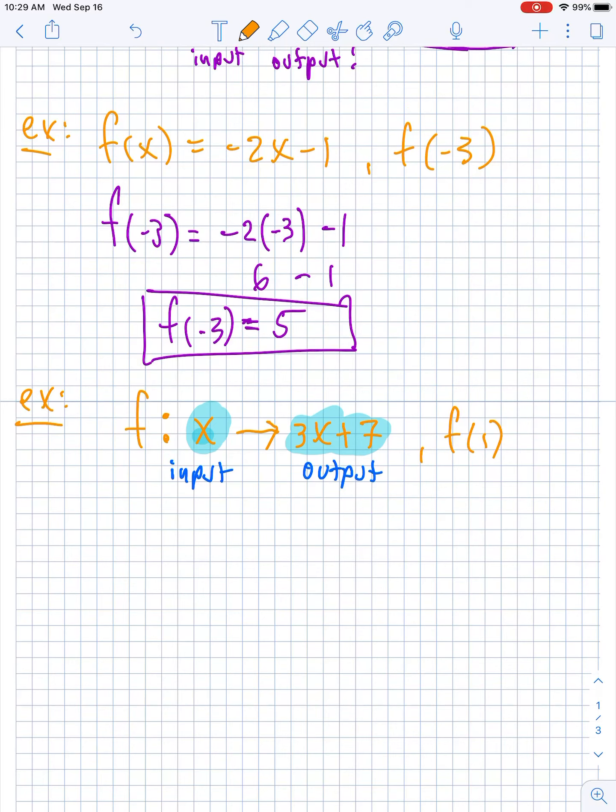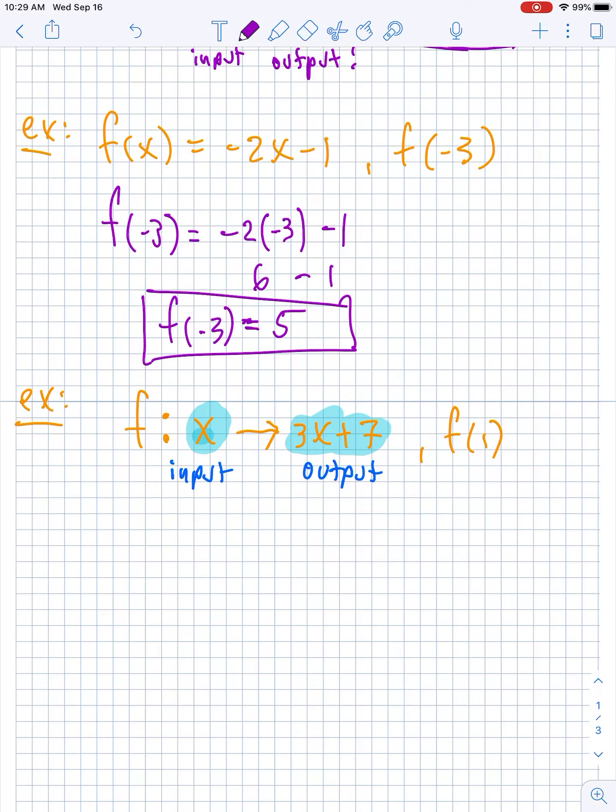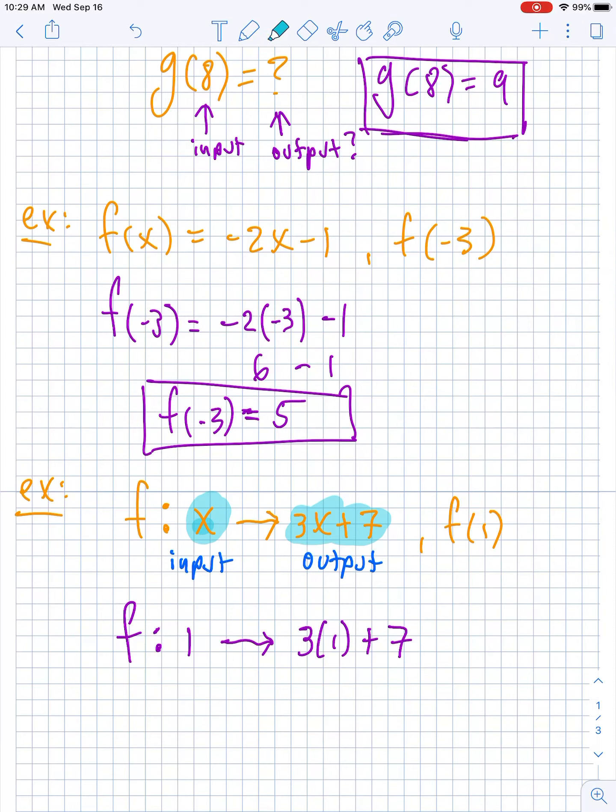So I believe in the example in the book they want to know what f of 1 is. So what is f of 1? To find f of 1, you would do f colon 1 gets mapped to 3 times 1 plus 7. So it's really very similar to this guy up here, that it's like f of something equals -2 times something minus 1. You really just drop in the input into the x part of the output.